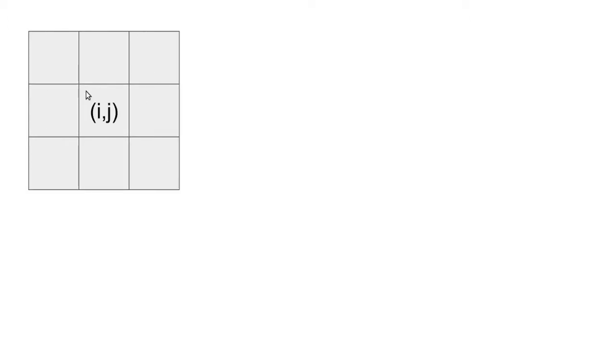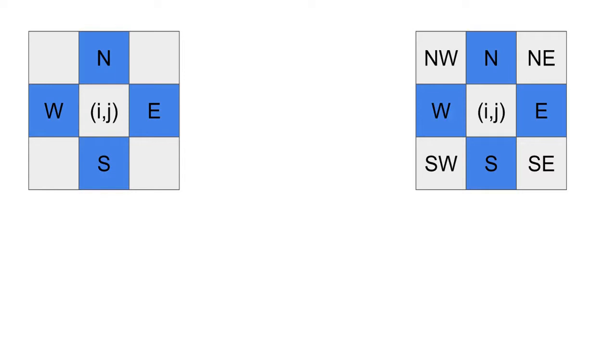This pixel of interest, I'll call it IJ, which I can loop over so I can go to different places in the grid. I want to know, what does it mean to be a neighbor of I and J? So one thing it might mean is these four neighbors that are north, south, east, and west of the pixel we're interested in. Or we might include all of the diagonal neighbors as well.